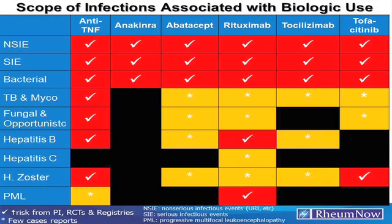Non-serious and serious infectious events are increased across all clinical trials. TNF inhibitors have the widest array of infectious risks. Anakinra is probably quite safe, and that may extend to other IL-1 inhibitors. Abatacept doesn't seem to carry much risk. Rituximab has a unique risk of serious viral infections, with PML being the worst. Tocilizumab has nothing special, but tofacitinib has a notably higher rate of zoster compared to other agents.